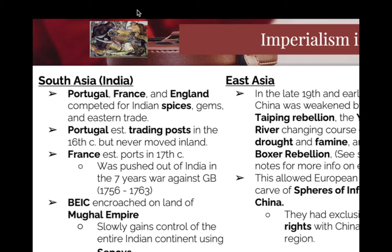Because conditions are terrible, the Europeans are going to create spheres of influence — they use it to capitalize on and abuse their position. Spheres of influence are popping up in China until 1911. I don't know if you want to make a note — they are going to be in place until 1911.